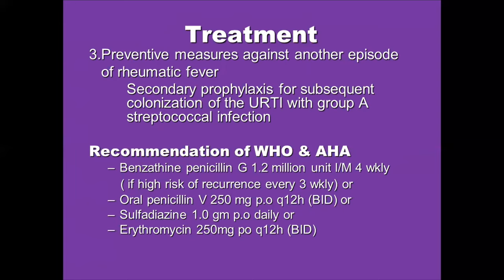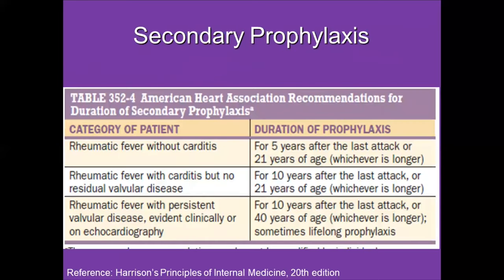For secondary prophylaxis, benzathine penicillin G 1.2 million units every 3 weeks — or every 2 weeks in high-risk patients — is the preferred and highly effective drug. If not feasible or unavailable, oral penicillin V 250 mg twice daily can be used. For patients with penicillin allergy, erythromycin or sulfadiazine can be used.